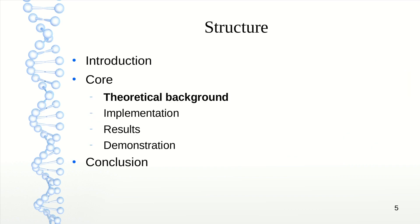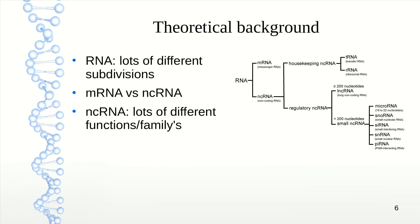Let's go to the theoretical background. RNA has many different subdivisions. The biggest are mRNA and non-coding RNA. mRNA is translated into proteins. However, non-coding RNA does not code for any protein. We have different kinds of non-coding RNAs, like housekeeping non-coding RNAs, most known are tRNA and rRNA. But we also have regulatory non-coding RNAs with different functions.